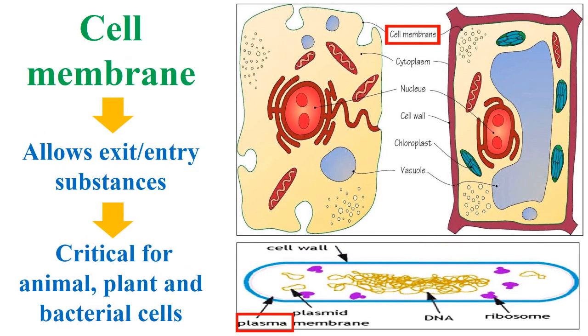Cell membrane allows exit and entry of substances, so it acts as a critical part for animal, plant, and bacterial cells.